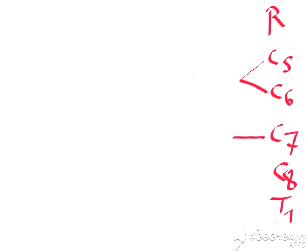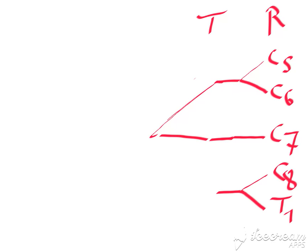Roots will form trunks. C5 and C6 unite to form the upper trunk, the middle trunk is C7 only, and C8 and T1 will unite to form the lower trunk. So trunks then will divide to give divisions.